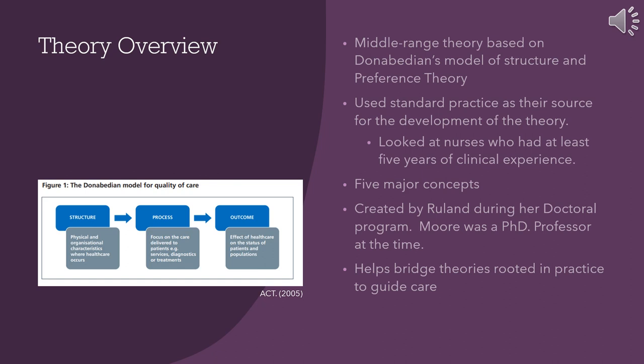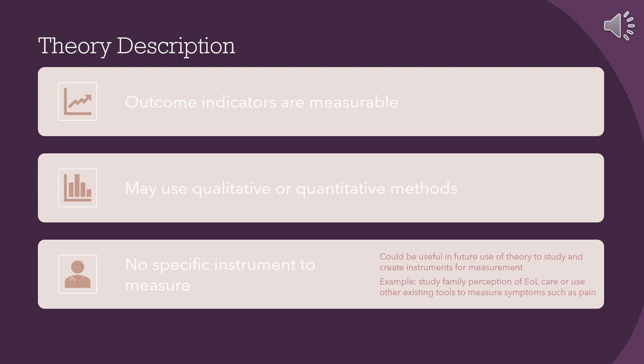This theory was created while Ruland was finishing her doctoral program, and Moore was a PhD professor at the time teaching nursing theory. The Peaceful End-of-Life Theory has measurable outcome indicators and may use qualitative or quantitative methods, but there are currently no specific instruments to measure outcomes. It is noted that future work should create such instruments — for example, studying family perception of end-of-life care or using existing tools to measure symptoms such as pain.